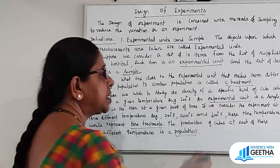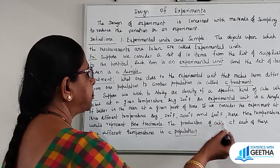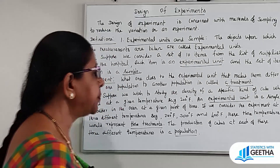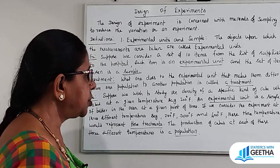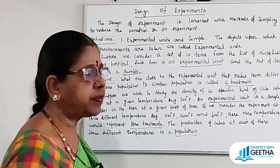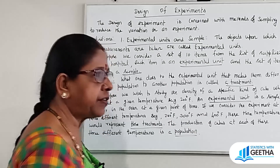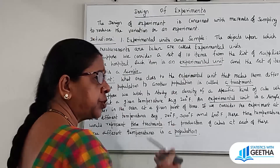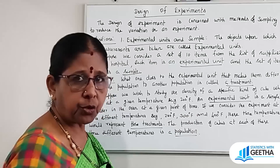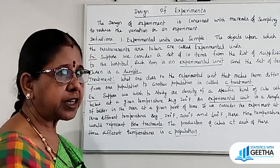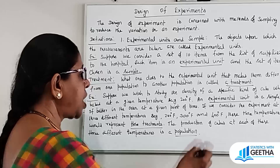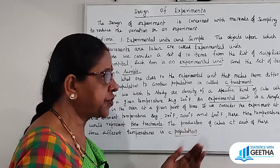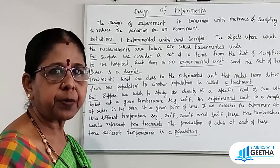These three temperatures represent three treatments. At 200, 300, and 400 degrees Fahrenheit, we use the 3 temperatures. The production of cakes at each of these 3 different temperatures is a population.